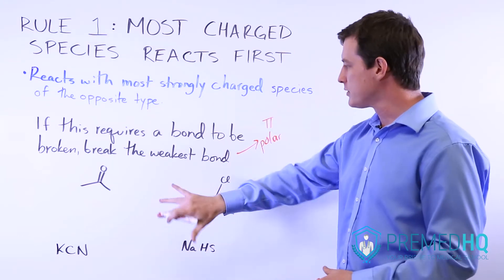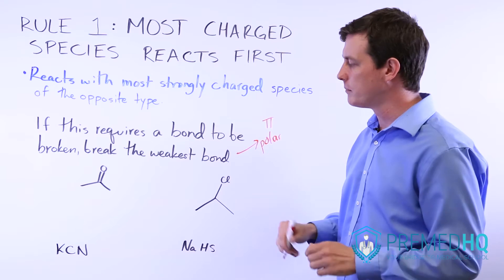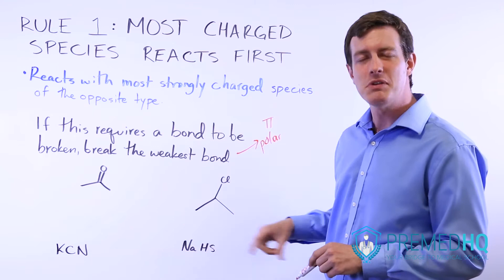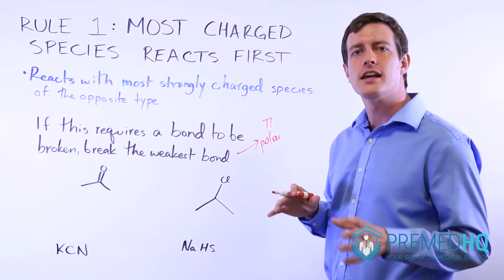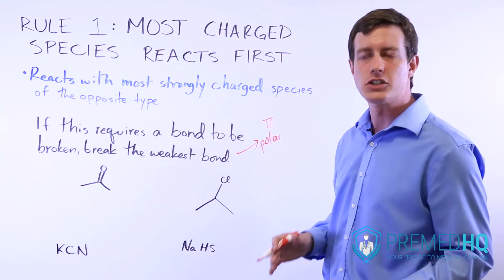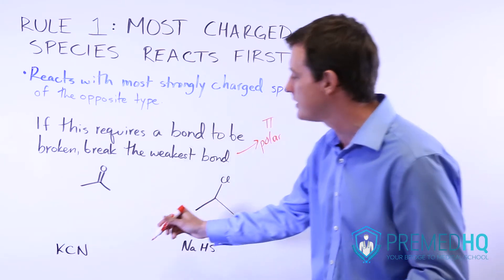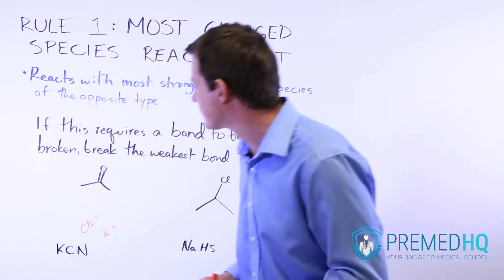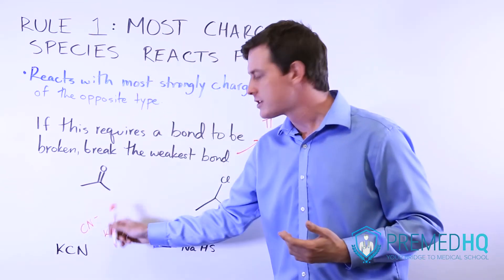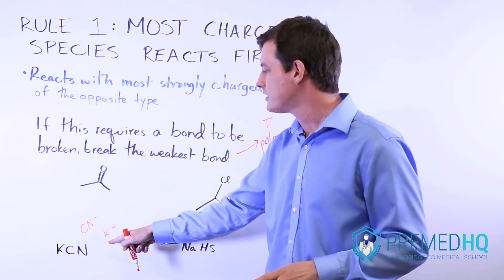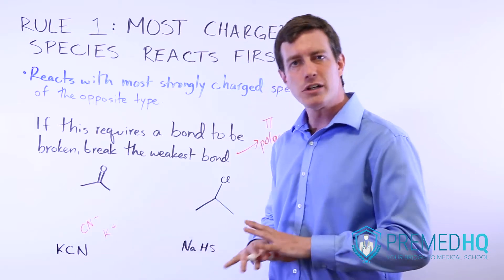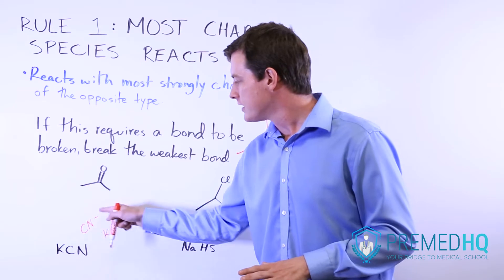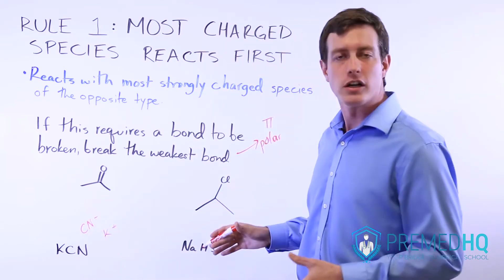Here I have two examples we can work through. The first thing: when you see any K or Na species, always be suspicious that it is a salt being used to deliver a negatively charged species. KCN will dissociate into K⁺ and CN⁻. This K⁺ is one of our spectator ions — a highly charged species unlikely to react with carbon — but what we do have is this cyanide ion, which is a strong nucleophile.